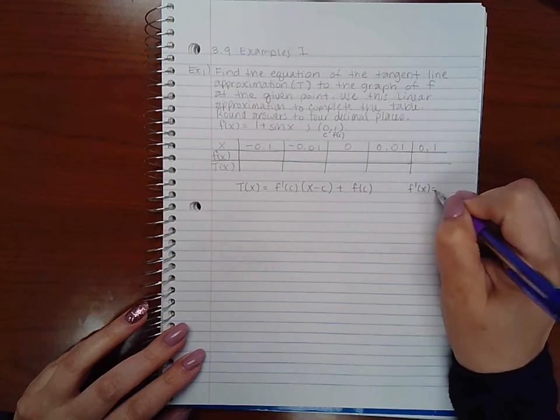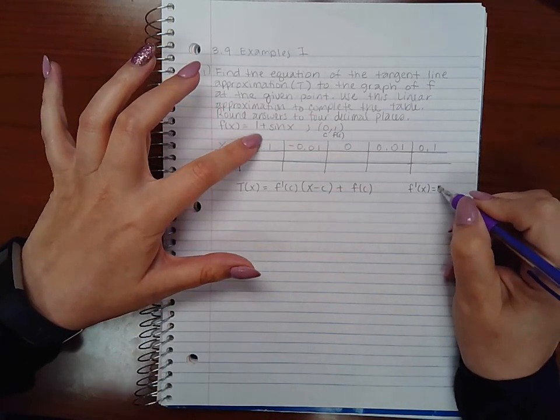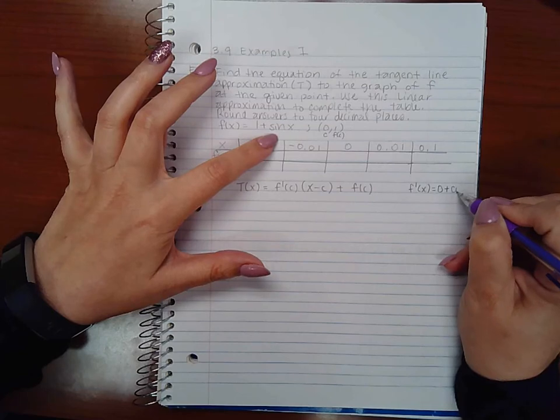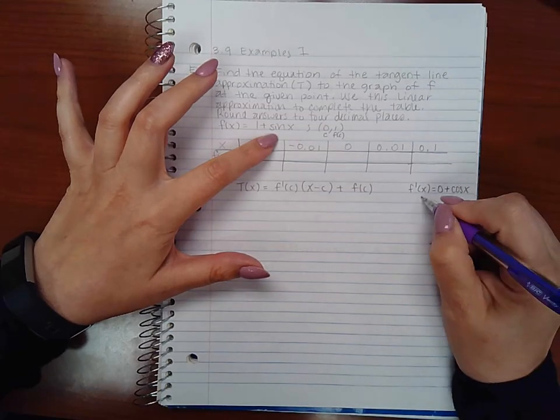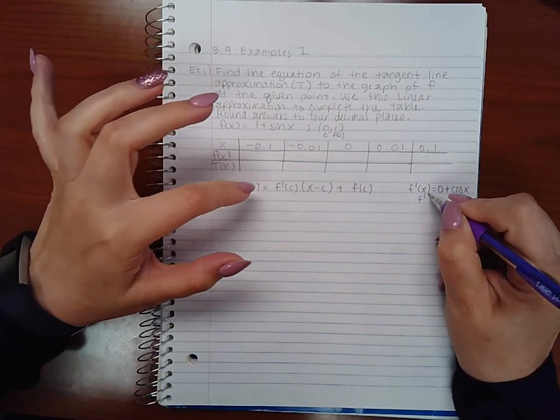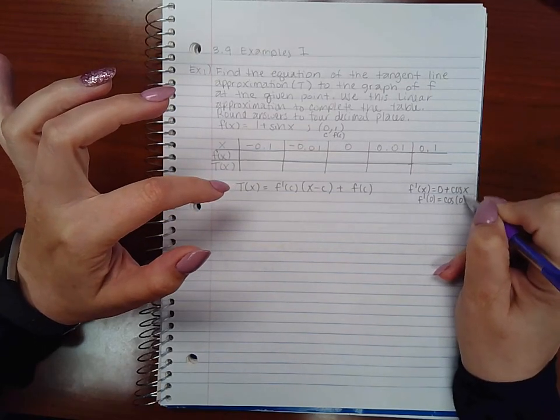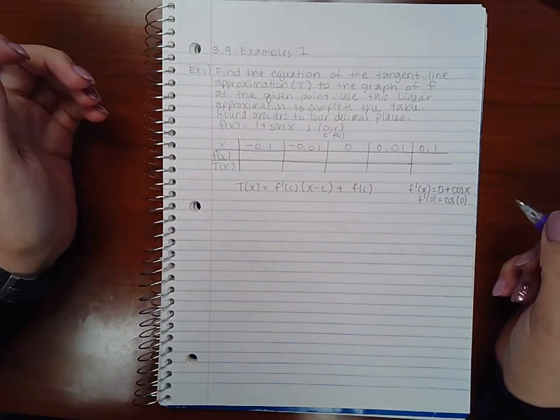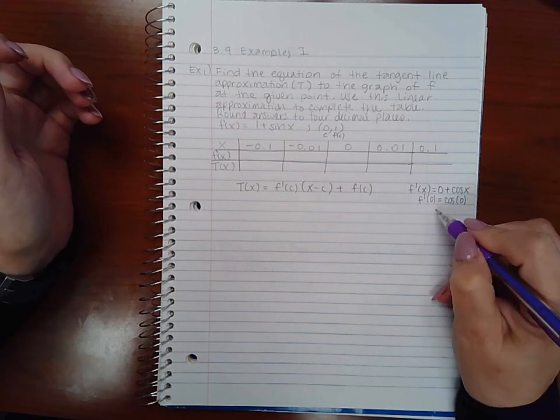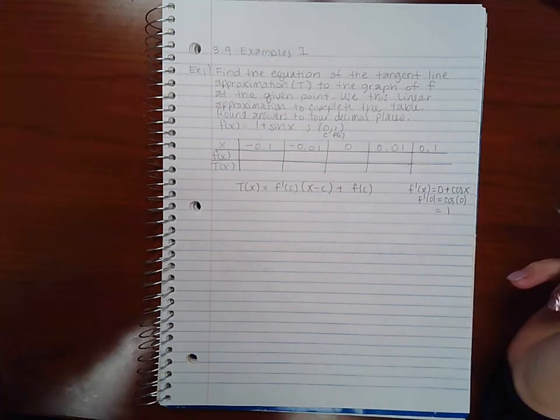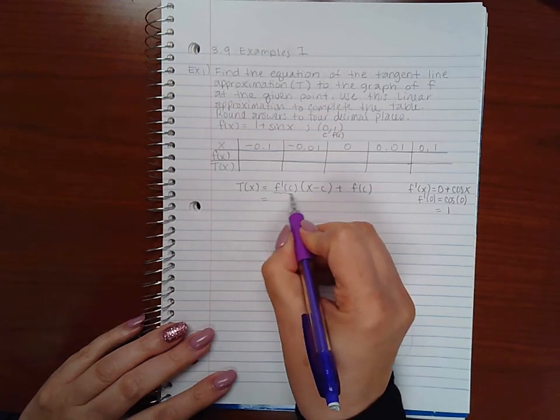The derivative of 1 is 0, and the derivative of sine is cosine, so f'(x) = cos(x). To find f'(c), I need to find f'(0), which means plugging 0 into the derivative. Cosine of 0 is 1, so f'(0) = 1.